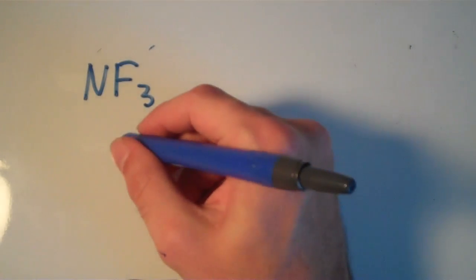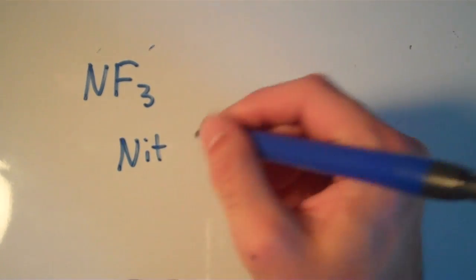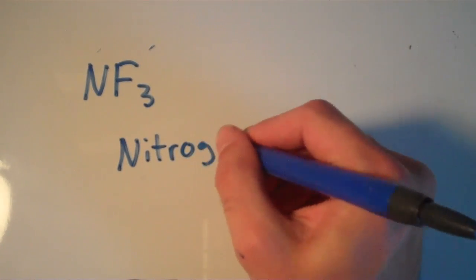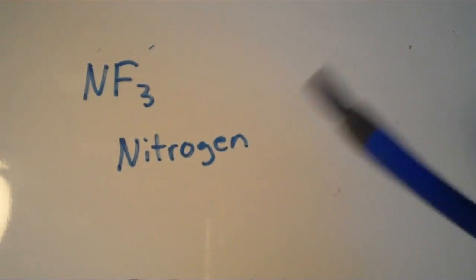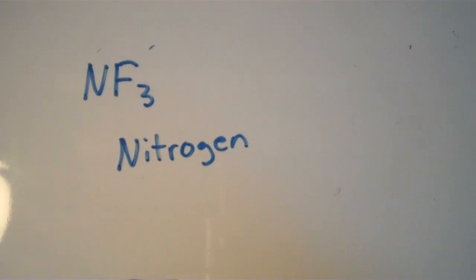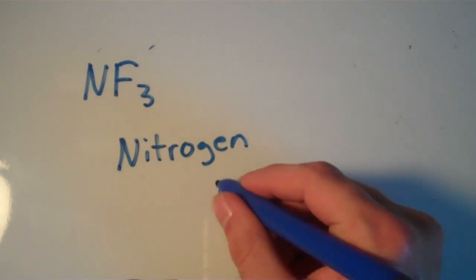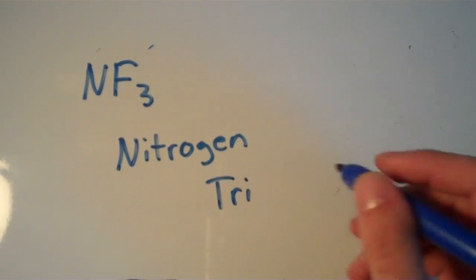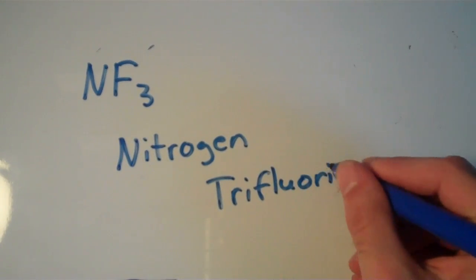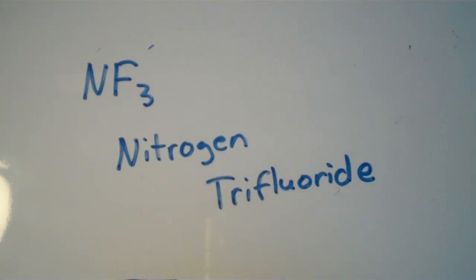NF3. What is the name of NF3? Well, we have nitrogen and we have fluorine. We have one nitrogen, so that means we just put nitrogen, not mononitrogen. And then we have three fluorine atoms, so that means we're going to use trifluoride. Nitrogen trifluoride.